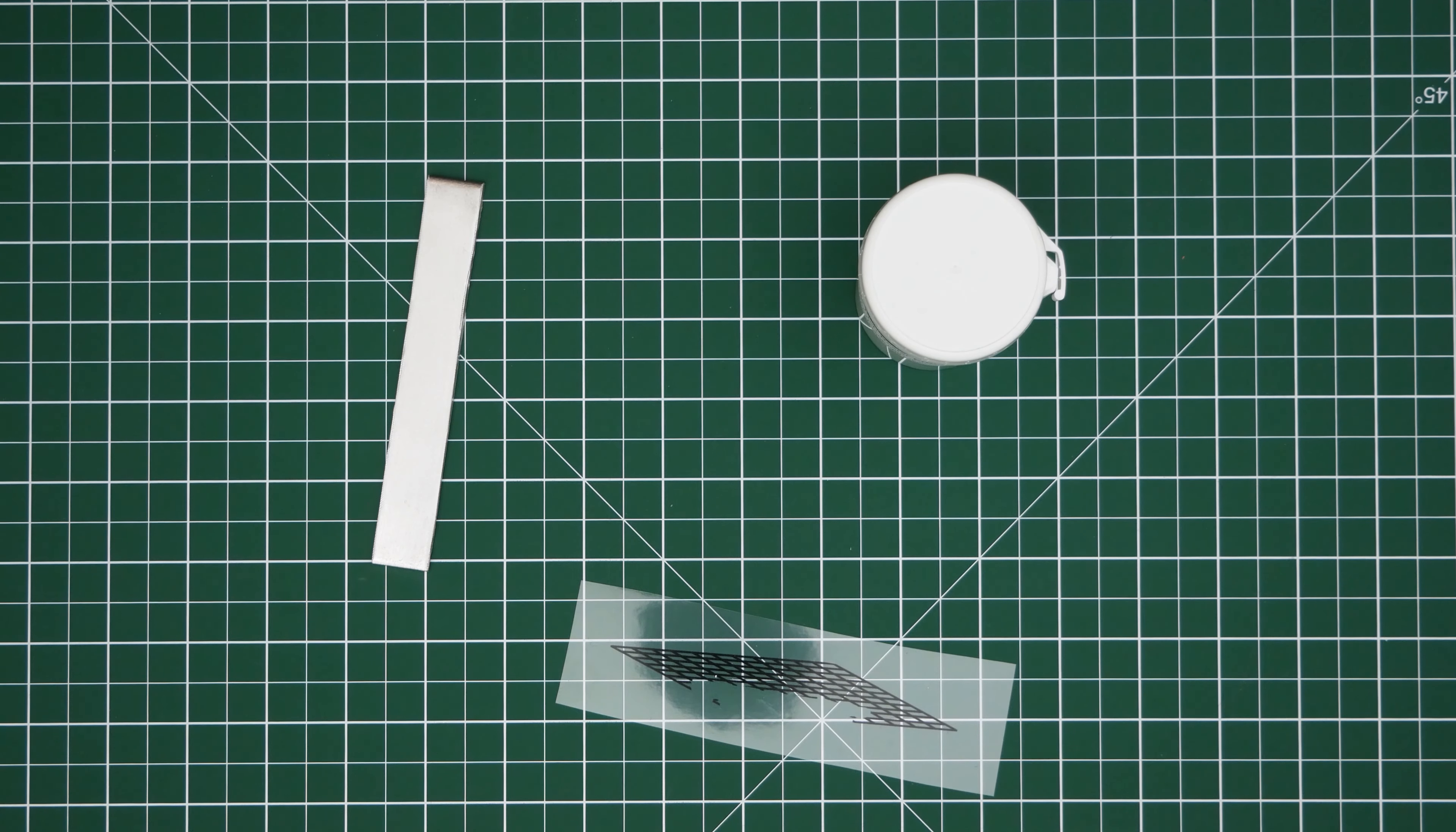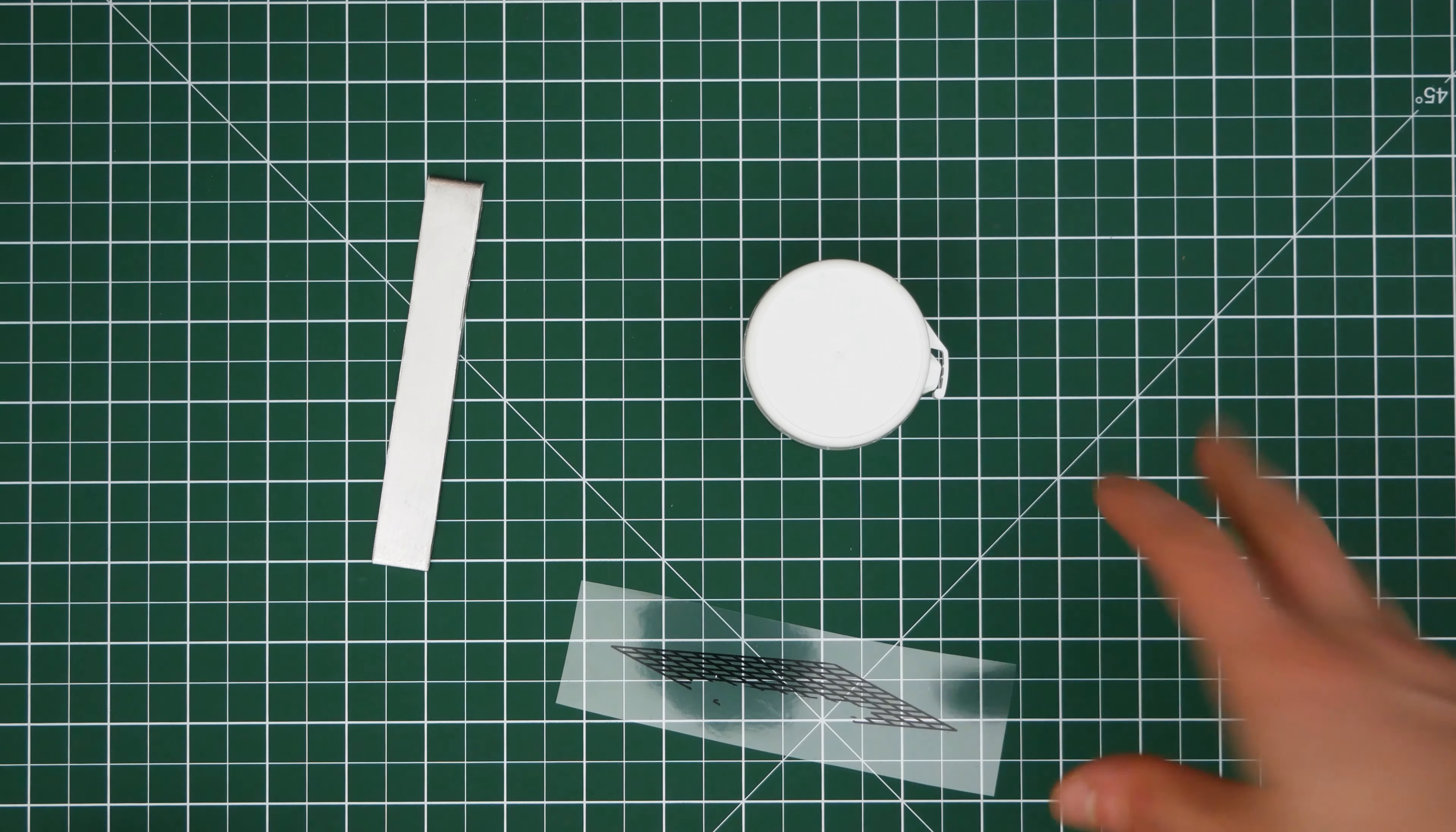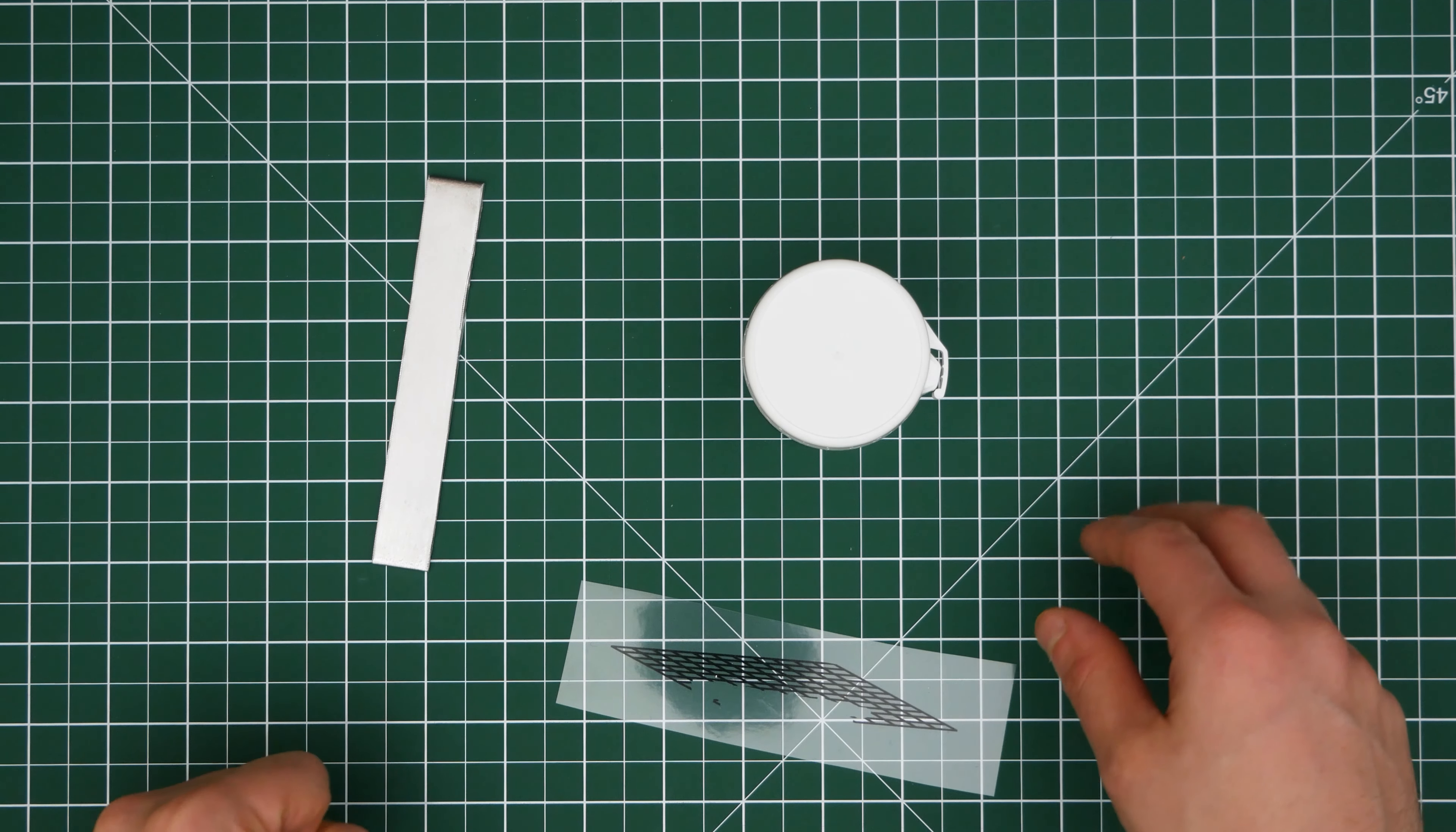Hello everyone, welcome back to another etching experiment. We've got hold of some photo imageable etch resist emulsion. This acts very much like screen printing emulsion - you coat it, you can expose it, and then you can print with it. The difference with this is that it's resistant to the etch mordant.